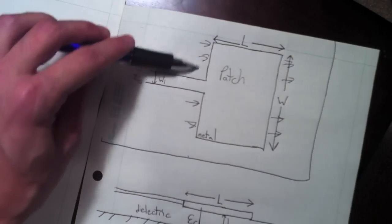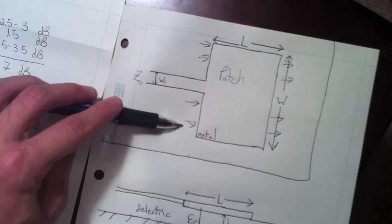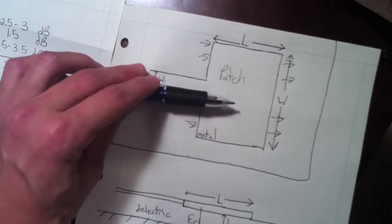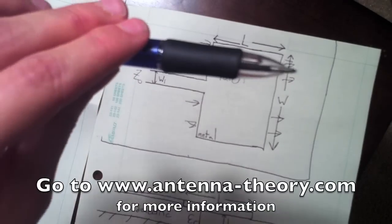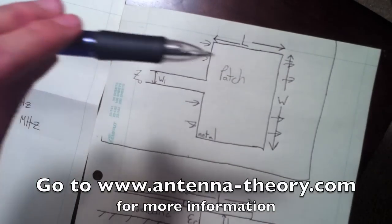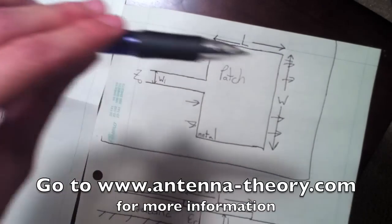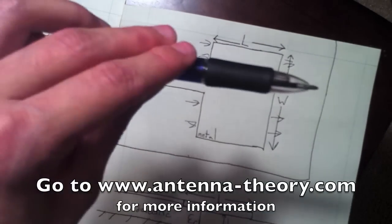Here's the fields that are giving rise to the radiation. As such, the peak direction of radiation is going to be up and the polarization is going to be right in line with the E field, which is in this direction.